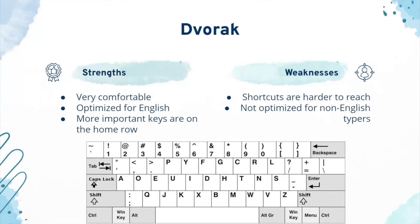In terms of weaknesses, shortcuts and symbols are harder to reach with Dvorak, and it's not exactly optimized for non-English typists, making it not necessarily better in every case.